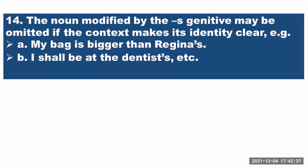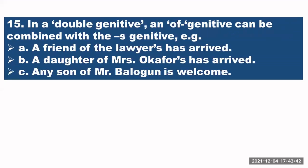Rule number fourteen — the noun modified by the s-genitive may be omitted if the context makes its identity clear. For example, instead of 'my bag is bigger than Regina's bag,' you can say 'my bag is bigger than Regina's' — omitting the repeated noun. Similarly, 'I shall be at the dentist's' instead of 'I shall be at the dentist's office' or 'the dentist's clinic.' You can omit the noun when it is modified by the s-genitive.